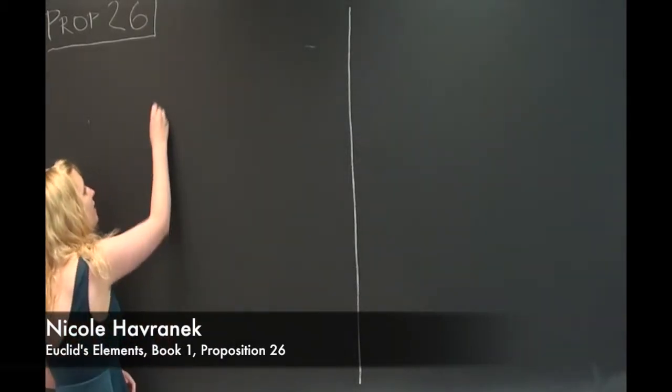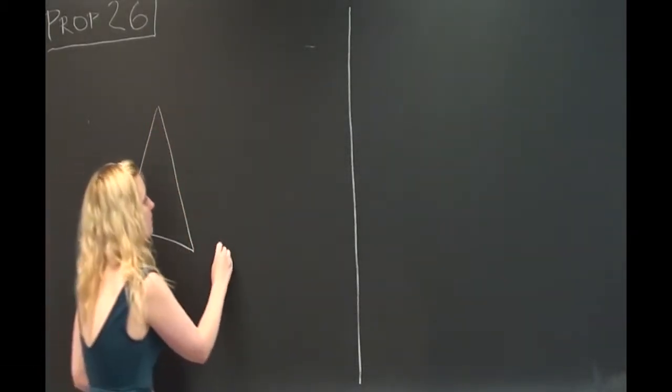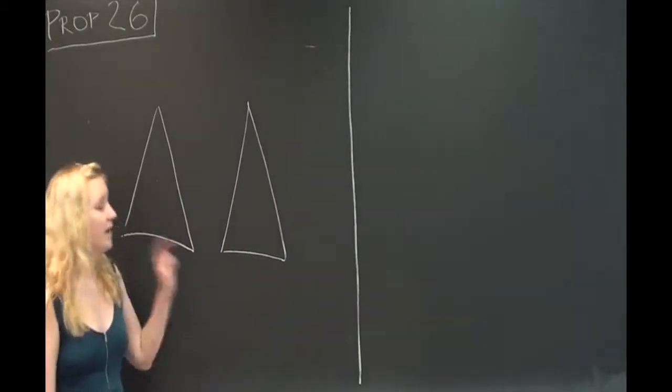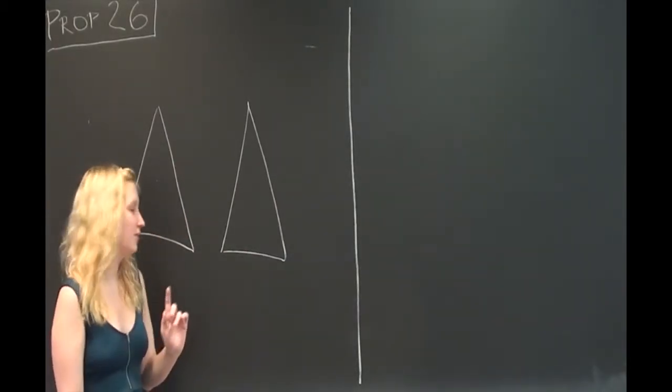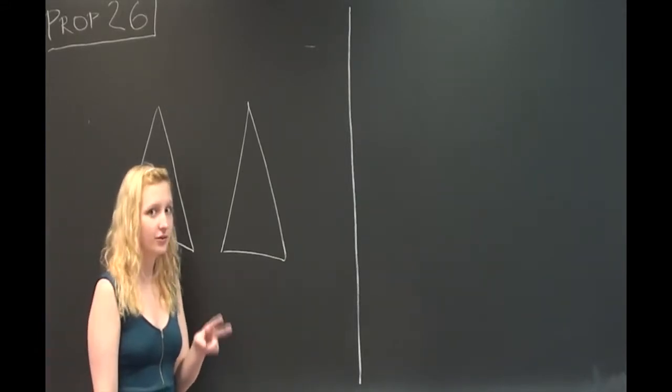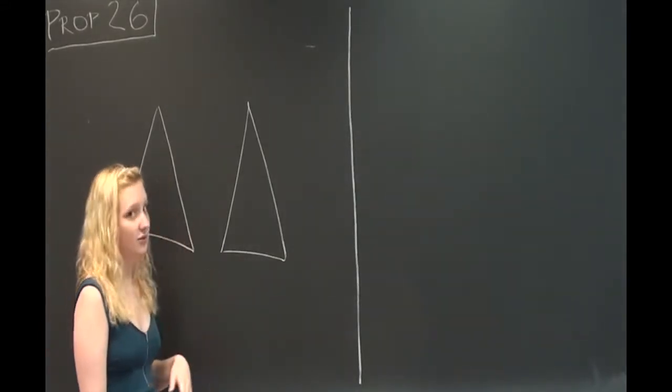Proposition 26 says that if you have two triangles that have two equal angles respectively, and also a line equal respectively, either the line between the two equal angles or a line across one of the equal angles, then the two triangles will be equal.